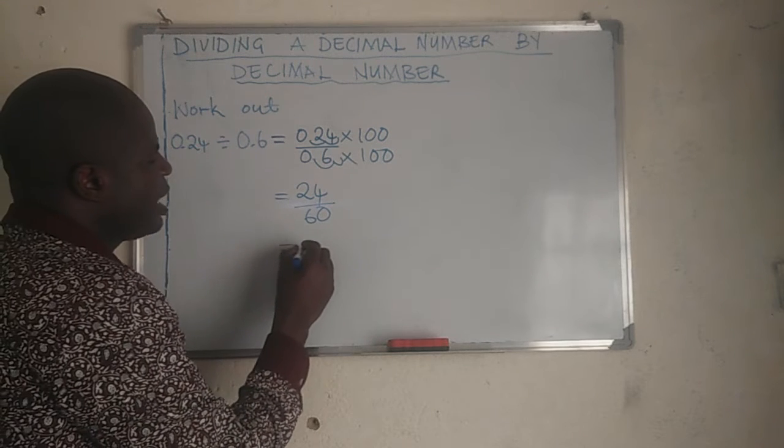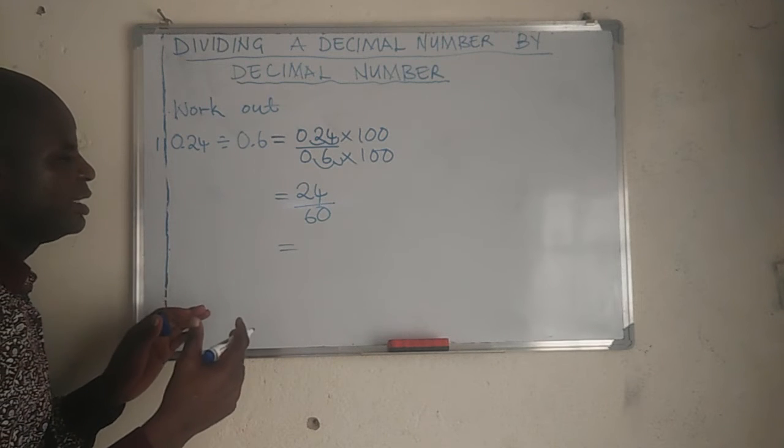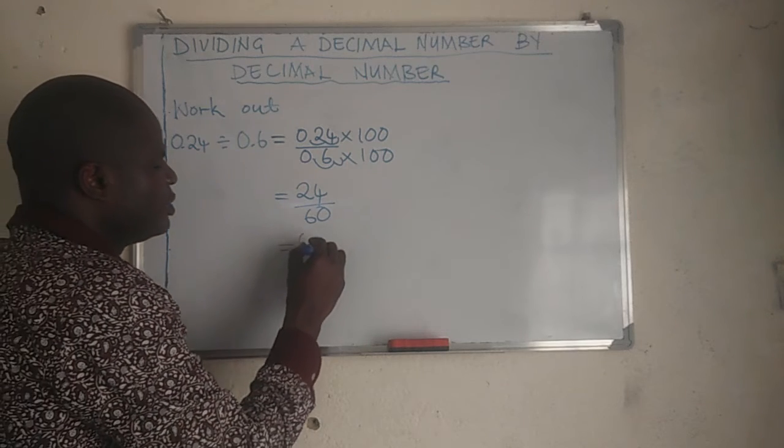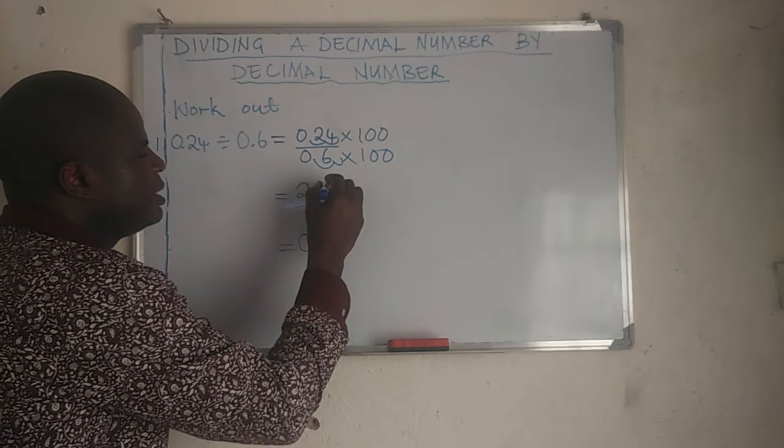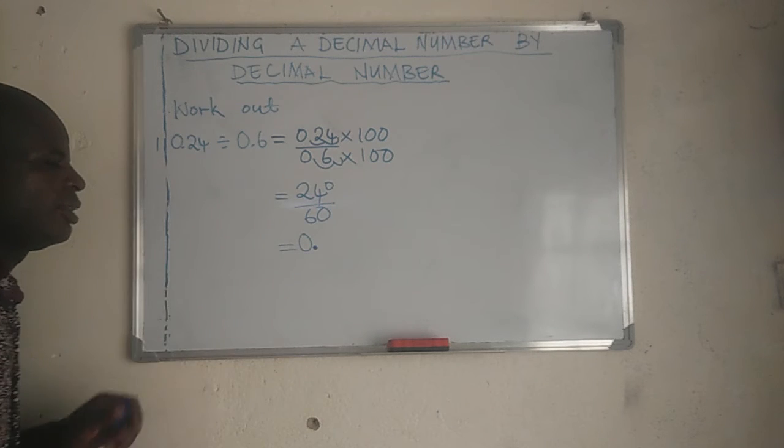I'm going to ask myself, how many times can 60 go into 24? It can't - 60 is bigger than 24. So I'm going to put 0, then add a 0 here and put a decimal point.